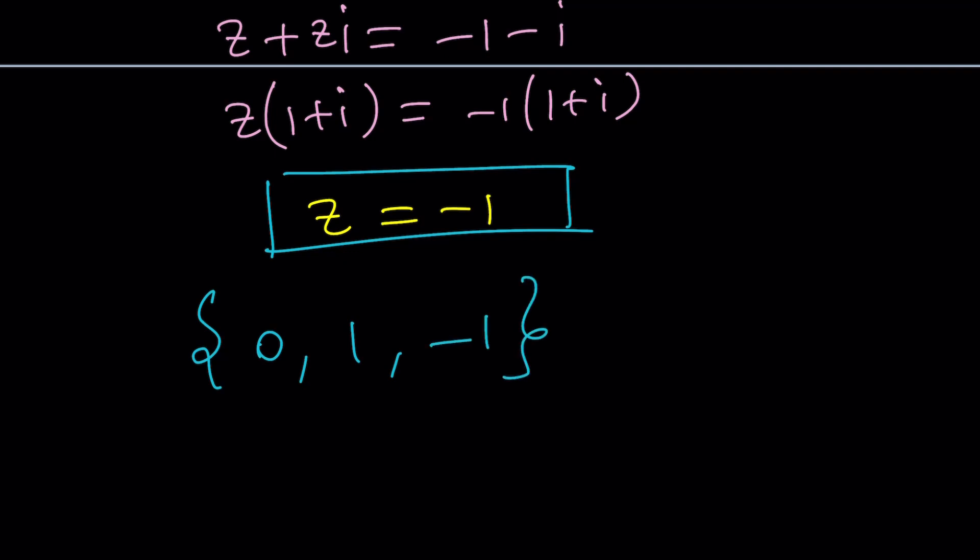We didn't get a non-real solution this time either. Too bad. So the solution set is going to be zero, one, and negative one. All real. Are you serious? Of course. Because if you replace Z with zero, you get I to the fourth equals negative I to the fourth, which is one.